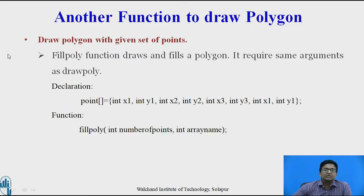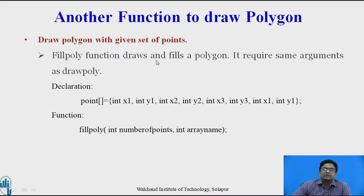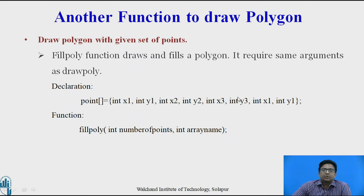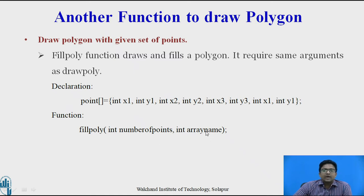There is another way to draw a polygon with a given set of points. Instead of using drawPoly, we may use the fillPoly function, which draws the polygon and also fills it. The parameters are the same — we need to specify the point array. In the array, we declare the set of points, and instead of drawPoly, we use fillPoly. The parameters are the same: int number of points and int arrayName.